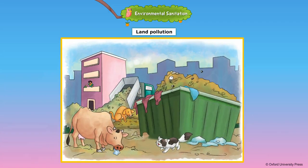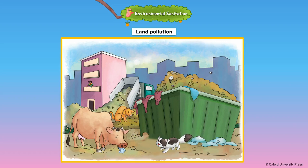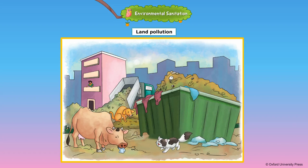We must keep our homes, classrooms, places of work, parks and surroundings clean. Throw paper wrappers and fruit peels in the waste paper basket. We should put all waste in covered dustbins. Dirt and filth attract flies, cockroaches and rats that spread diseases.